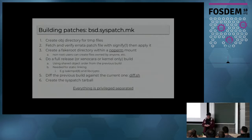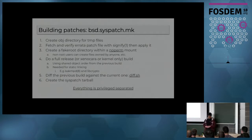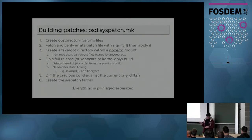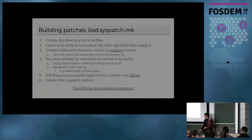We have a make file for that called syspatch.mk. Basically we stripped a bit of what the OpenBSD release process does, as well as some part of the ports tree, and assembled them into this file. We fetch and verify the patch with signify. We create a fake root using the no-perm option because we lose privileges quite early — when we install files we need to be root. We use the open mount option for that. Then we diff the current built fake root against the former one and create the syspatch tar.gz.